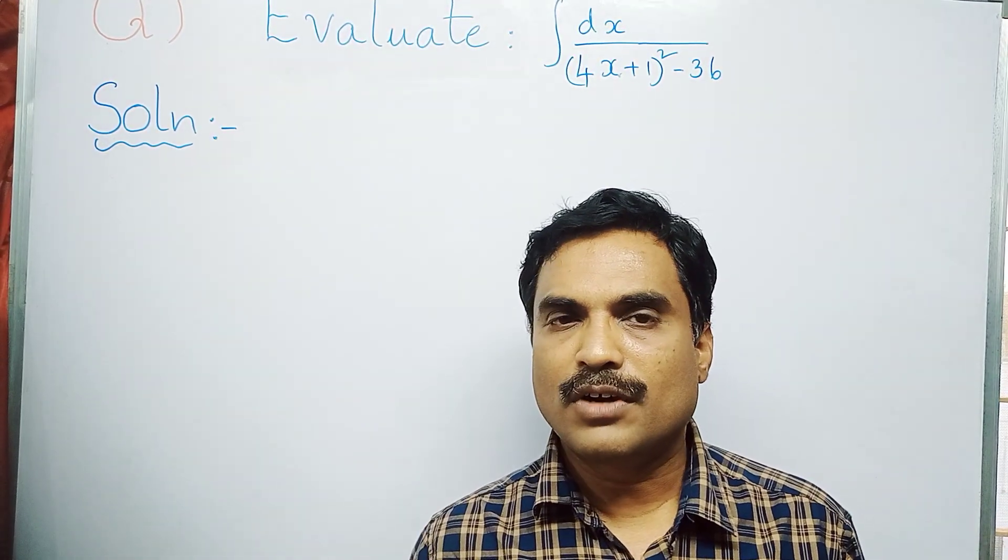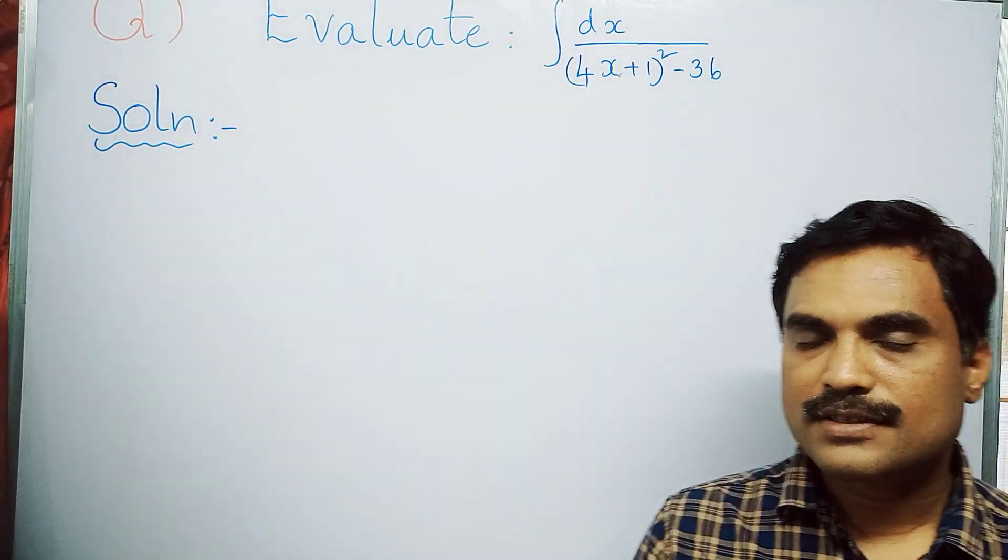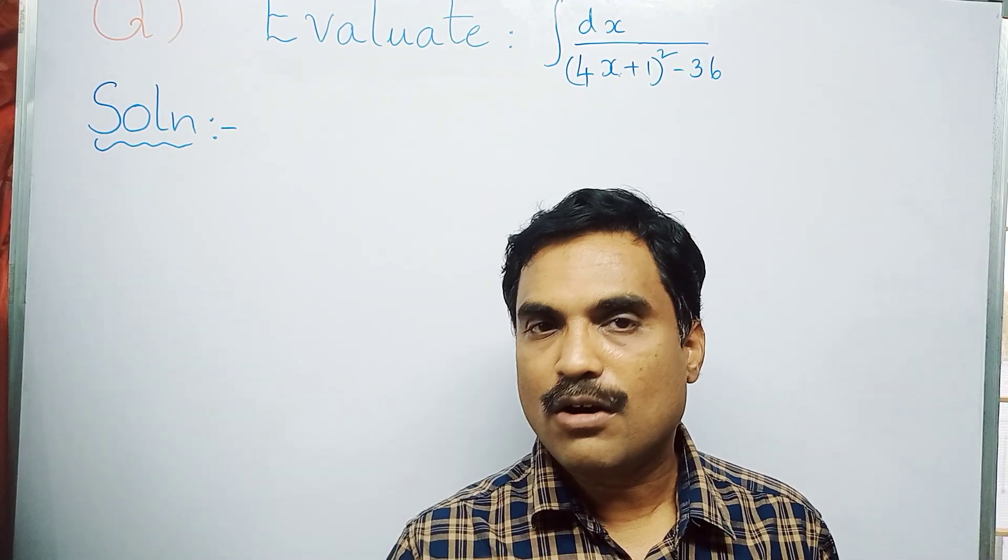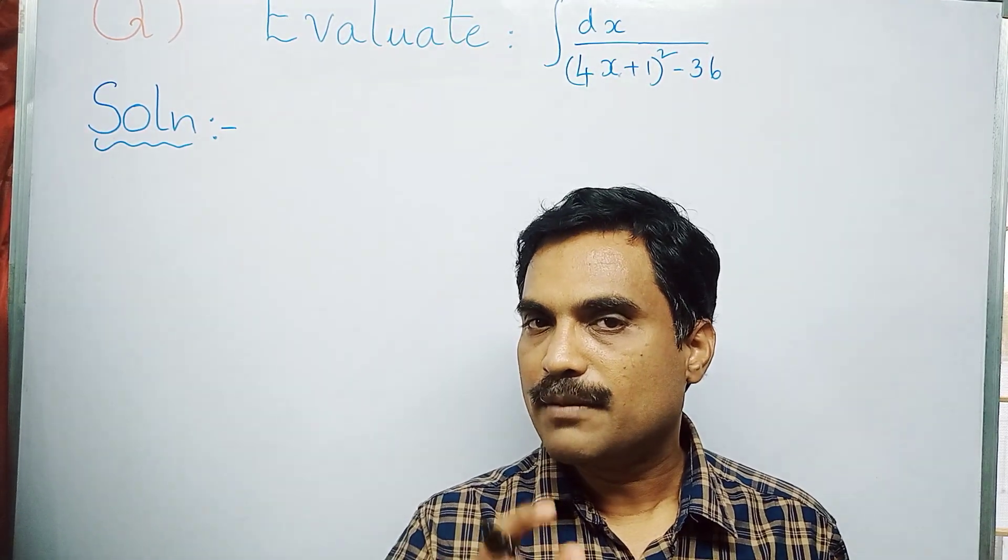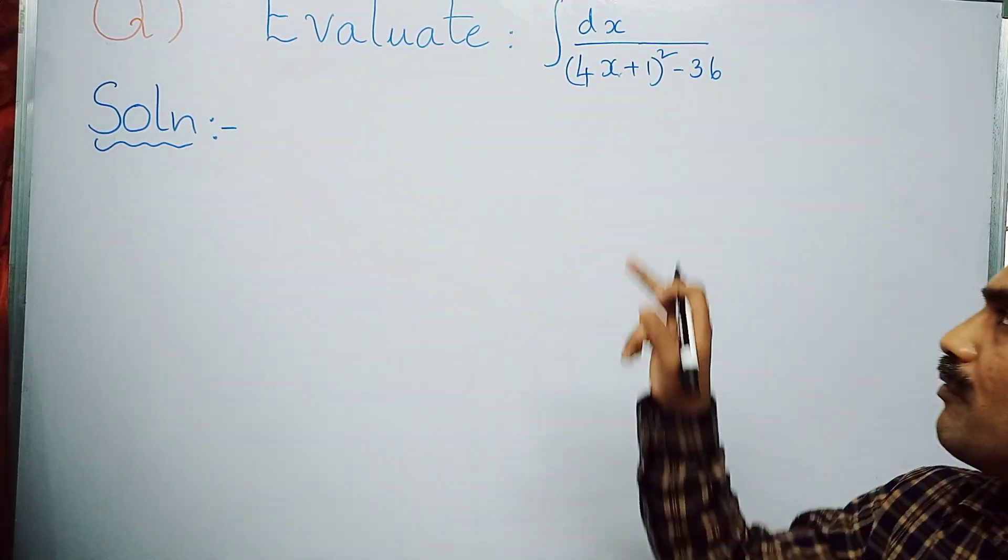This problem can be solved by using the formula: integral dx by x² - a² equals 1 by 2a log of (x - a) by (x + a) plus c. Before using that formula, first we have to take 4x + 1 as u.